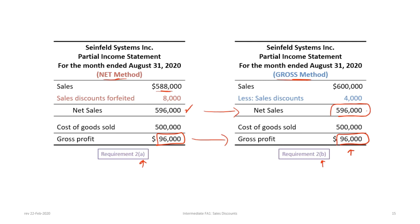The difference between the methods lies in how discounts appear and how they are allocated to the sales and sales discounts accounts. The net method presumes the discount will be taken, so sales are lowered by the full discount amount and then increased by sales discounts forfeited. The gross method records sales at full value and reduces them by discounts actually taken. In either case, only $4,000 in discounts were taken — it's just a matter of how the company chooses to account for them.